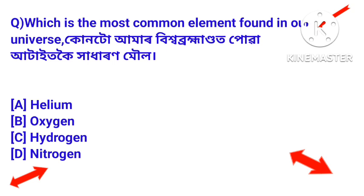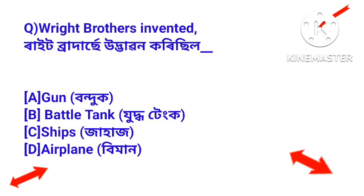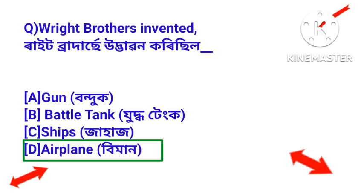Which is the most common element found in our universe? Kuntu amar vishwa brahmandat poa ataitko khaadharan mohlo. Next question: Wright Brothers invented the airplane — right brothers e viman udhbhaavan ko isil poon prathame.